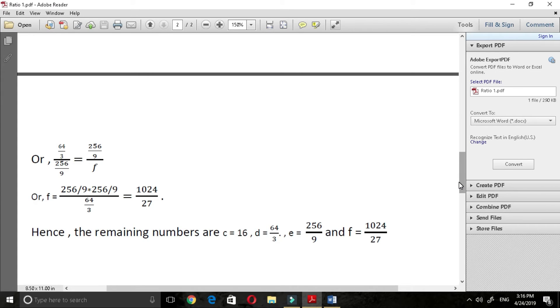Hence, the remaining numbers are c is equal to 16, d is equal to 64 by 3, e is equal to 256 by 9 and f is equal to 1024 by 27.